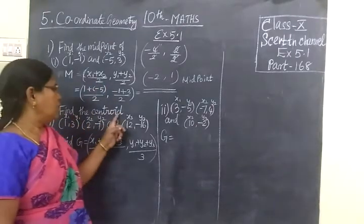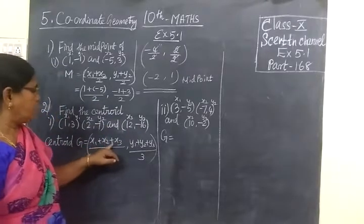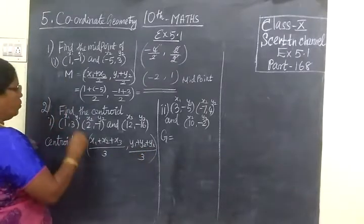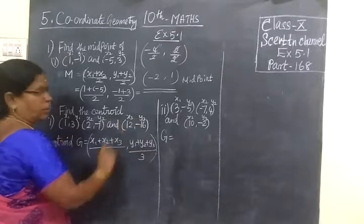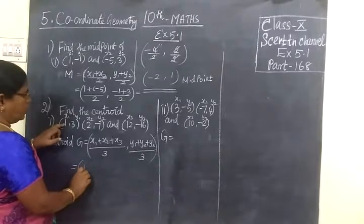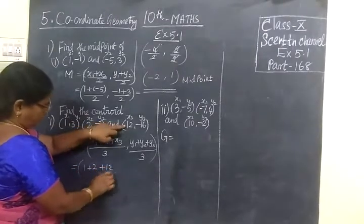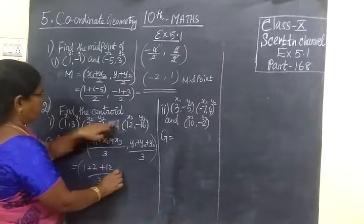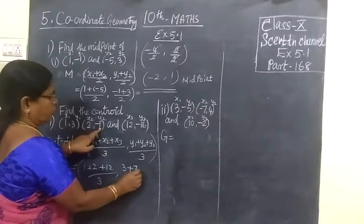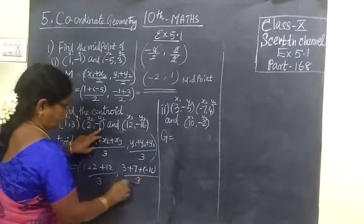Next we are going to find the centroid. Centroid formula is x1 plus x2 plus x3 by 3, y1 plus y2 plus y3 by 3. So x1 y1, x2 y2, x3 y3, everything marked here. So this is equal to 1 plus 2 plus 7 by 3, then 3 plus 7.